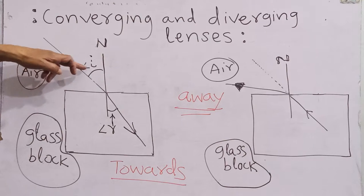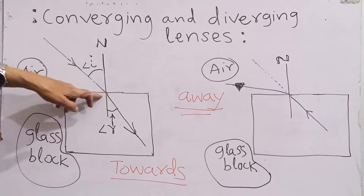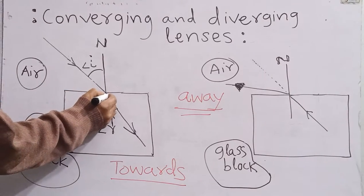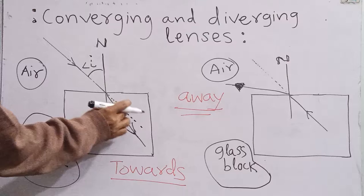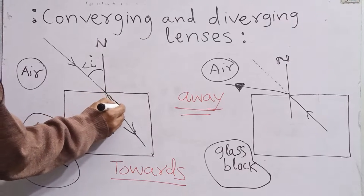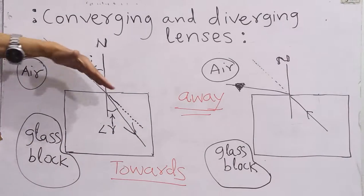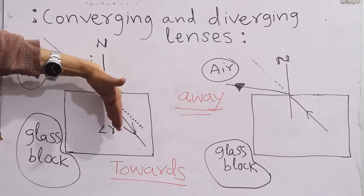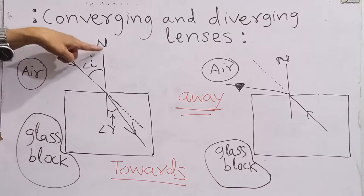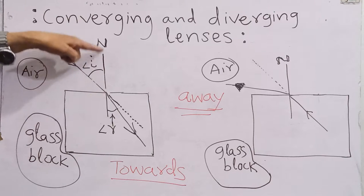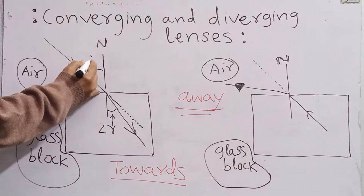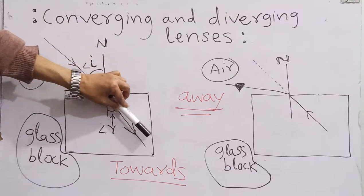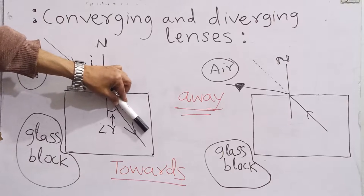This light ray falls at this point, which is called the point of incidence. The light ray should go straight along this dotted line, but we see that it does not go straight. It bends and comes close to the normal. This line is called the normal. It is used to measure angles, because we measure every angle with respect to this normal. So the light ray should be going in this direction, but it bends and comes close to the normal.